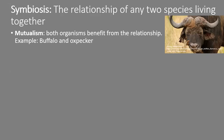However, when the oxpecker picks all the ticks off the buffalo and there are no longer enough ticks, it will start opening up little wounds and eating blood directly from the buffalo. That now moves away from a mutualistic relationship — the oxpecker is no longer benefiting the buffalo. It becomes painful and potentially exposes the buffalo to disease. So it's not as simple a relationship as many people think. Other examples of mutualism include bees and flowers: bees pollinate the flowers while accessing nectar, then carry pollen to the next flower for the plants to reproduce.